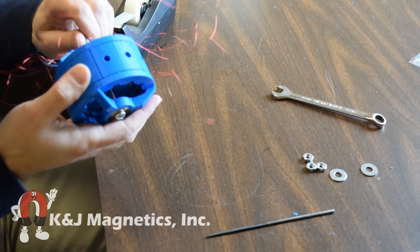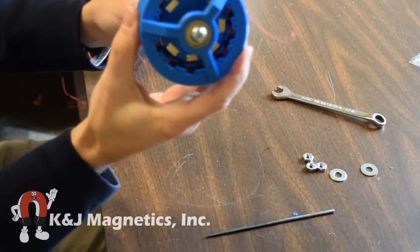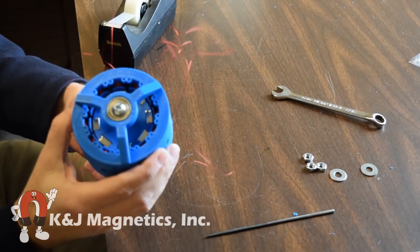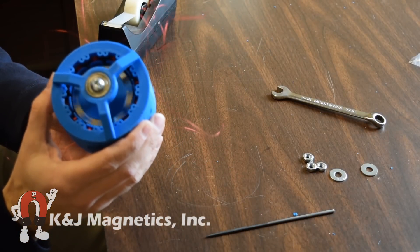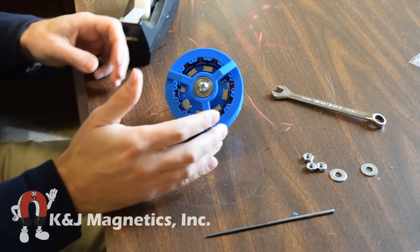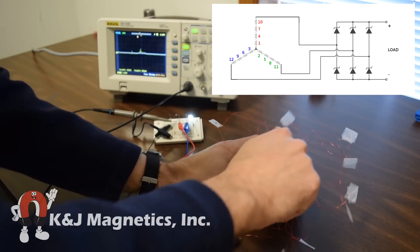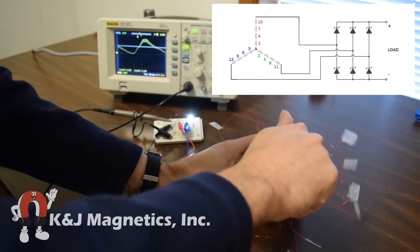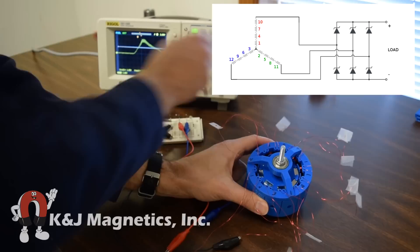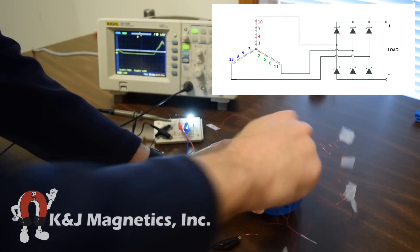With the whole thing put together, the center rotor spins pretty freely. We're ready to wire it up. We wired up this stator in a three phase Y configuration hooked into a diode bridge to normalize the output into a DC voltage output.